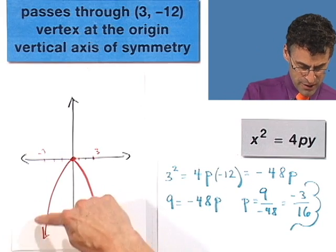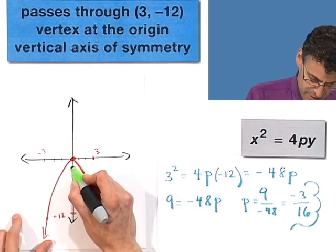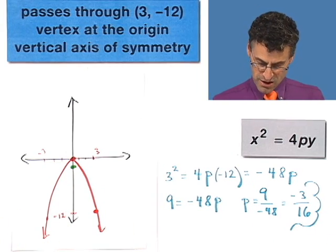Do you see it? Because the parabola is going to orbit around that focus. And so it's got to be somewhere down here, negative, and it turns out it's negative 3 sixteenths. And so that's awesome.